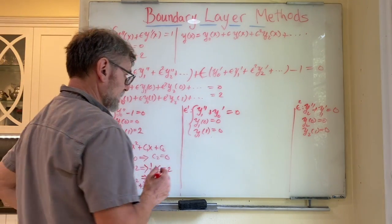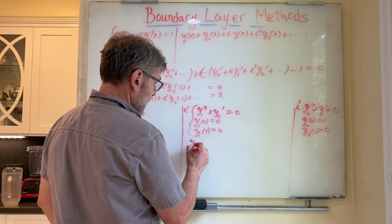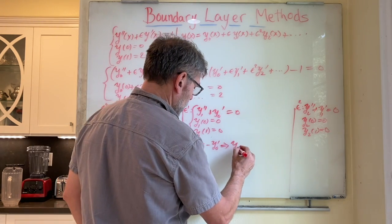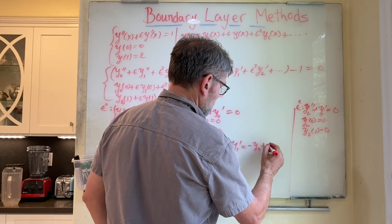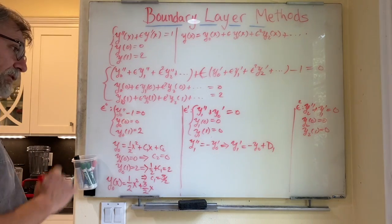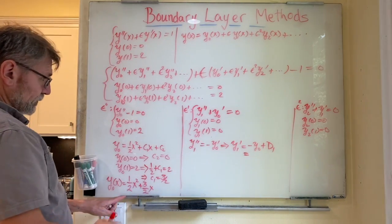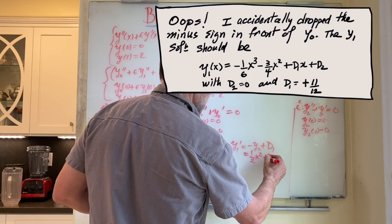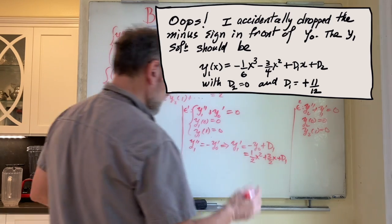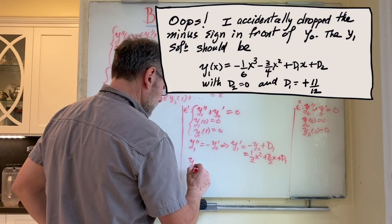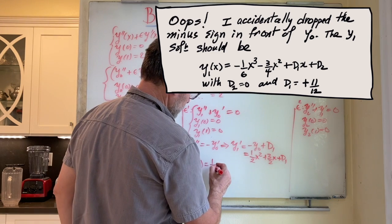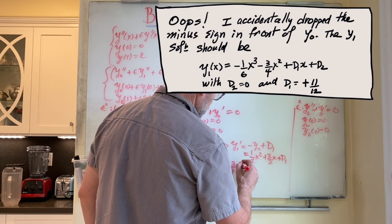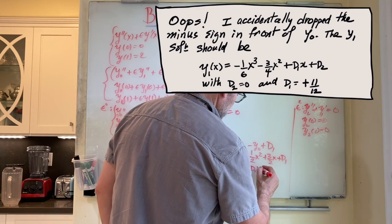Moving to the next order: y1 double prime equals minus y naught prime. Integrating once gives y1 prime equals minus y naught plus a constant d1. Substituting in what y naught is, we get minus one half x squared minus three halves x plus d1. Integrating again, y1 of x equals one sixth x cubed plus three quarters x squared plus d1 times x plus d2.